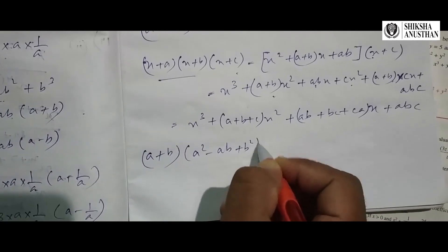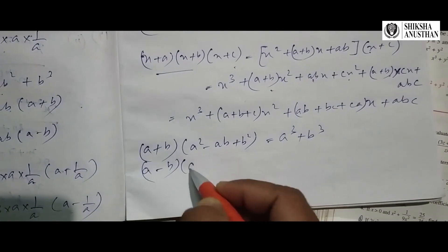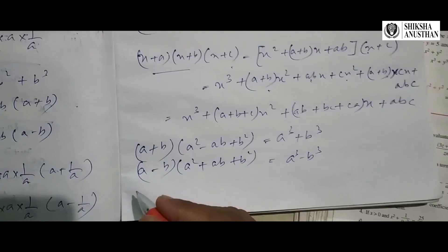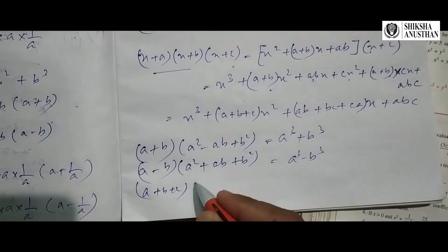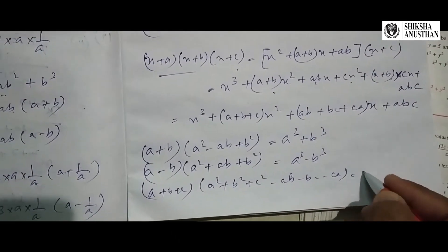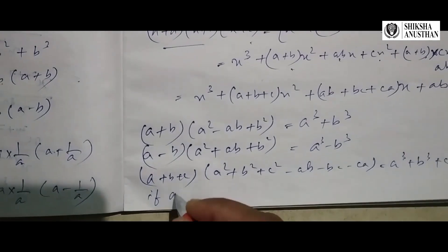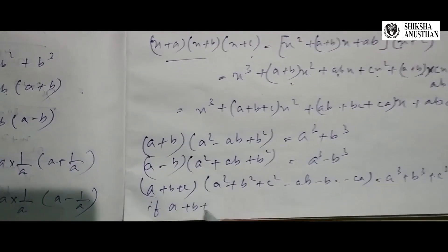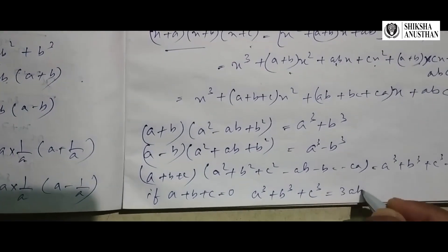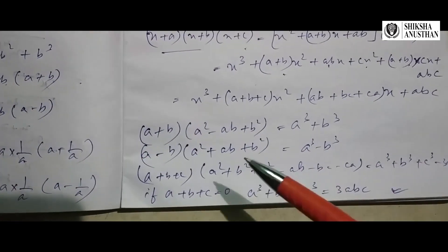Multiplying (a + b)(a square minus ab plus b square) gives a cube plus b cube. Multiplying (a - b)(a square plus ab plus b square) gives a cube minus b cube. If (a square plus b square plus c square minus ab minus bc minus ca) is multiplied by (a + b + c) we get a cube plus b cube plus c cube minus 3abc. Also, if a plus b plus c equals zero, then a cube plus b cube plus c cube equals 3abc. These are also important formulas.